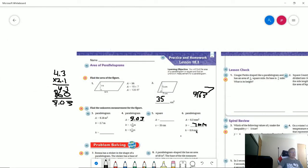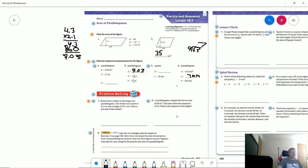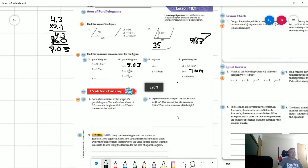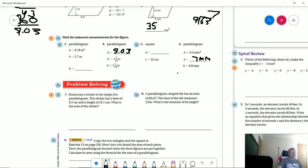Number 8, a parallelogram shaped tile has an area of 48 inches squared. The base measures 12 inches. That should give us a height of 4. So I can do 48 divided by 12 to get 4.